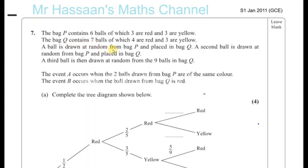A ball is drawn at random from bag P and placed in bag Q. A second ball is drawn at random from bag P and placed in bag Q. So you're picking a ball from bag P, putting it in bag Q, then picking another ball from bag P — so there's one less ball in bag P — putting that in bag Q. Now bag Q has 2 more balls than when it started. And then finally you take a ball out of bag Q.